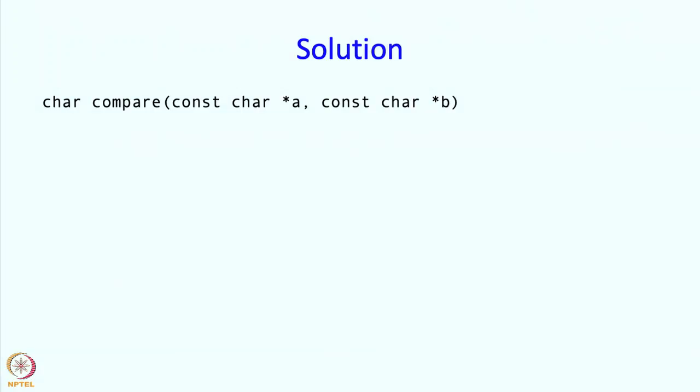How do you write this? Here is the function. Let us call it compare and it is going to return a char as we said, and it should take two character strings as arguments. The two that we want to compare. And since we do not intend to modify those two strings, we are going to make them constant. And of course, if we make them constant then we can also supply as argument character string constants if we wish.